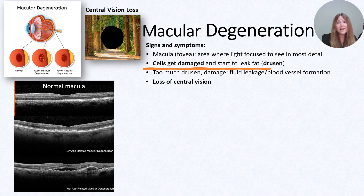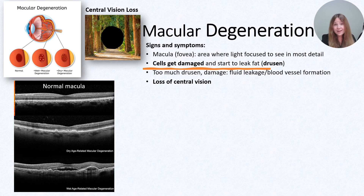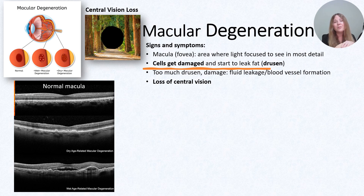You can see on the bottom left what this looks like on an OCT image, which is a cross-section of the macula. In this top image, this shows a normal macula — you see this smooth dip, and that's the fovea, and you can see how tightly those cells are lined up in these beautiful layers. The middle image shows a disruption of the architecture, and you see these bumps underneath — these are drusen, and you can see it's starting to disrupt the cells in the macula.